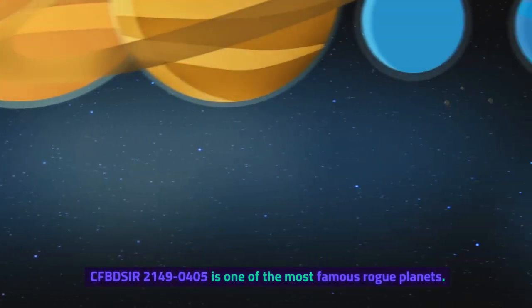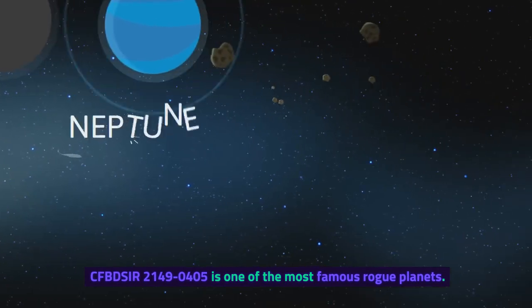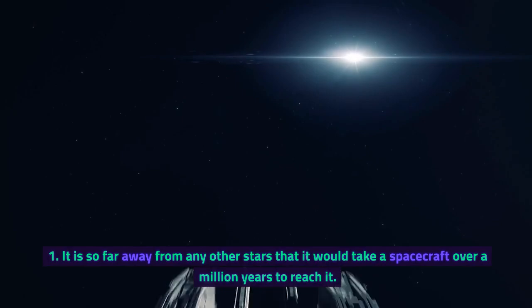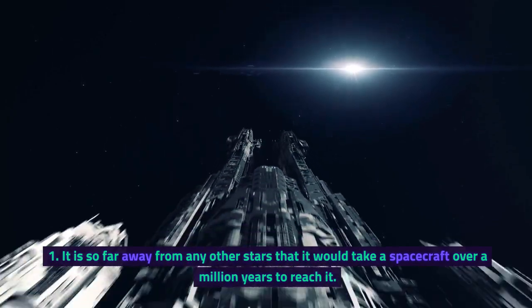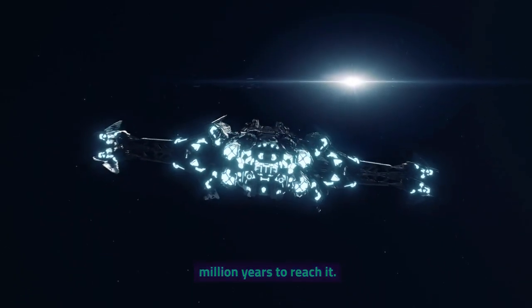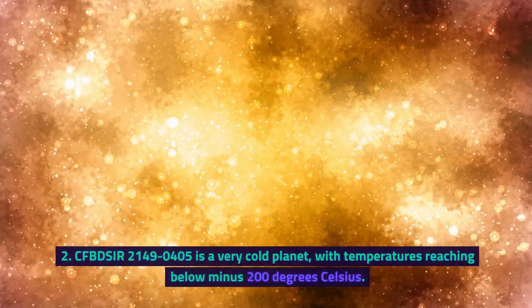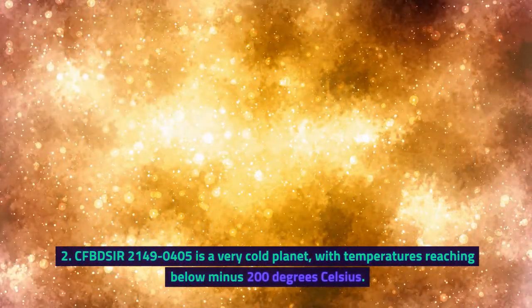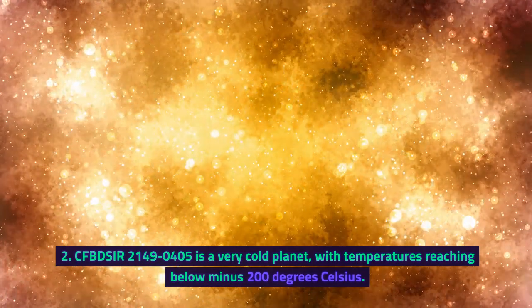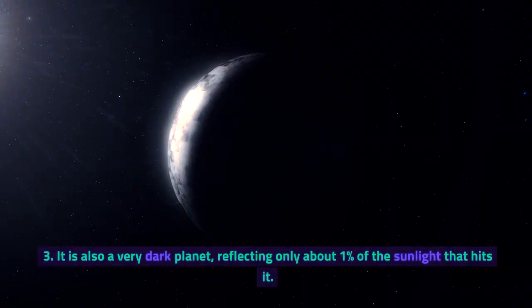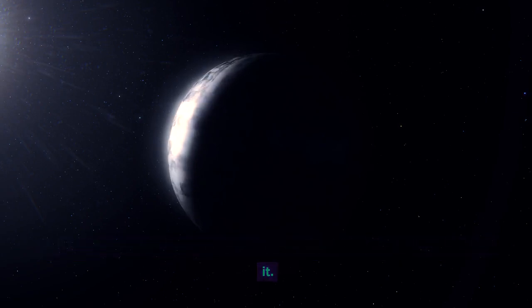CFBDSIR-2149-0405 is one of the most famous rogue planets. It is so far away from any other stars that it would take a spacecraft over a million years to reach it. CFBDSIR-2149-0405 is a very cold planet, with temperatures reaching below minus 200 degrees Celsius. It is also a very dark planet, reflecting only about 1% of the sunlight that hits it.